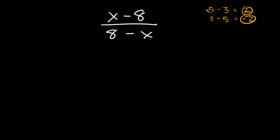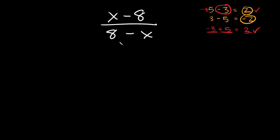If I wanted to flip 5 minus 3, I'd have to write it as negative 3 plus 5 — notice how I'm keeping the signs consistent. Negative 3 first, then plus 5, and negative 3 plus 5 equals positive 2, the exact same answer. So that's how you have to flip the bottom — you have to keep the signs consistent.